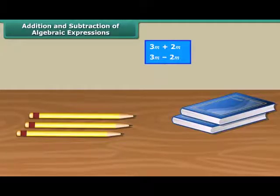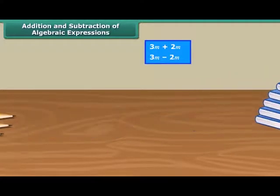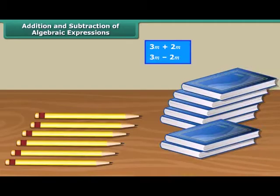Now, if we get another three pencils and five books, altogether, we now have six pencils and seven books. Now, again, we can't combine these objects since they are different.